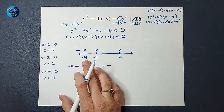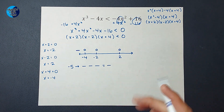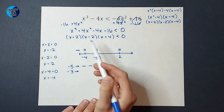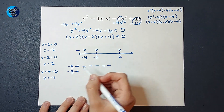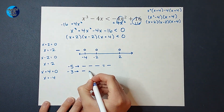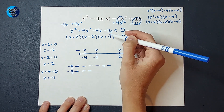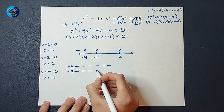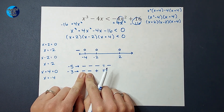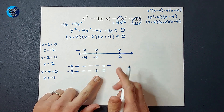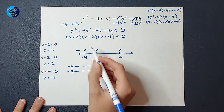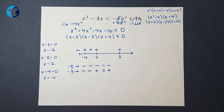Now let's plug in a number between negative 4 and negative 2 — let's use negative 3. Negative 3 plus 2 is negative, negative 3 minus 2 is negative, and negative 3 plus 4 is positive. Negative times negative gives positive, positive times positive gives positive. So when I plugged in negative 3, I got a positive answer.